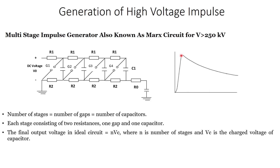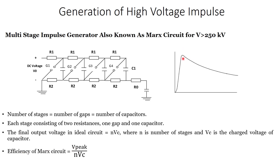The final output voltage in the ideal circuit — the peak impulse output with no losses — is equal to n·Vc, where Vc is the voltage across each capacitor and n is the number of stages. For a four-stage circuit the output will be 4·Vc. The efficiency of the Marx circuit equals V_peak (the actual output peak taken from the load) divided by n·Vc (the ideal case).